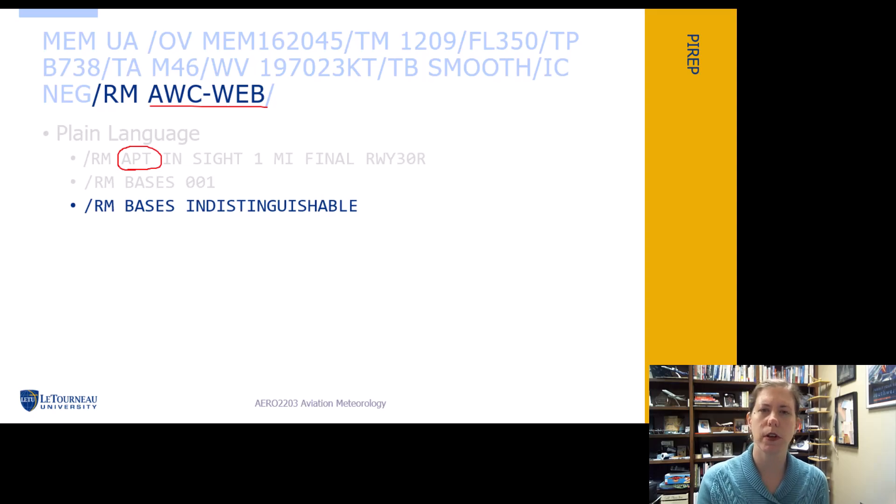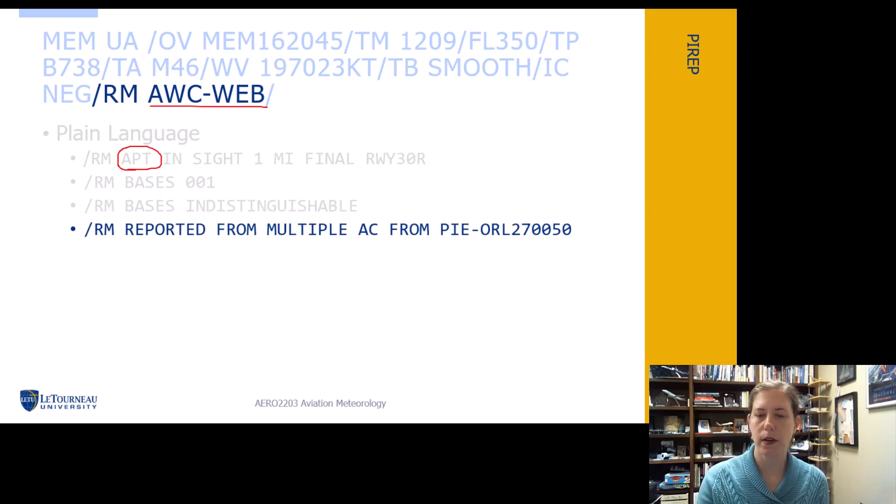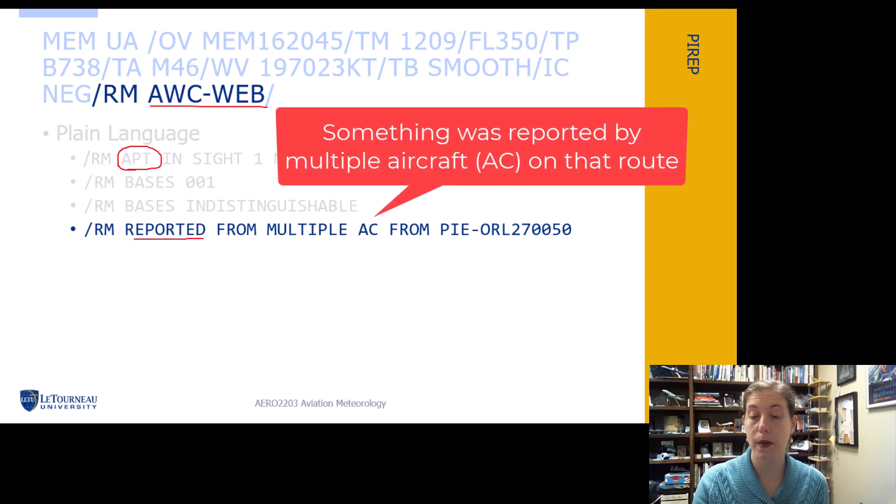Bases indistinguishable. So I couldn't tell where the bases of these clouds were, it just was impossible to say. This one is probably put in by ATC, meaning something has been reported by multiple aircraft between these two places. I think it's a couple of different VORs. So we have multiple aircraft reporting something.